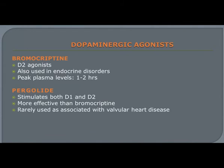Dopaminergic agonists include bromocriptine and pergolide, which are examples of ergot alkaloids. These drugs produce their effect by enhancing the activity of dopamine at D2 and D1 receptors. Pergolide is more effective than bromocriptine, but is rarely used nowadays because it produces valvular heart disease such as aortic stenosis. Bromocriptine is more commonly used in Parkinson's disease, as well as for acromegaly, diabetes mellitus, and hyperprolactinemia.